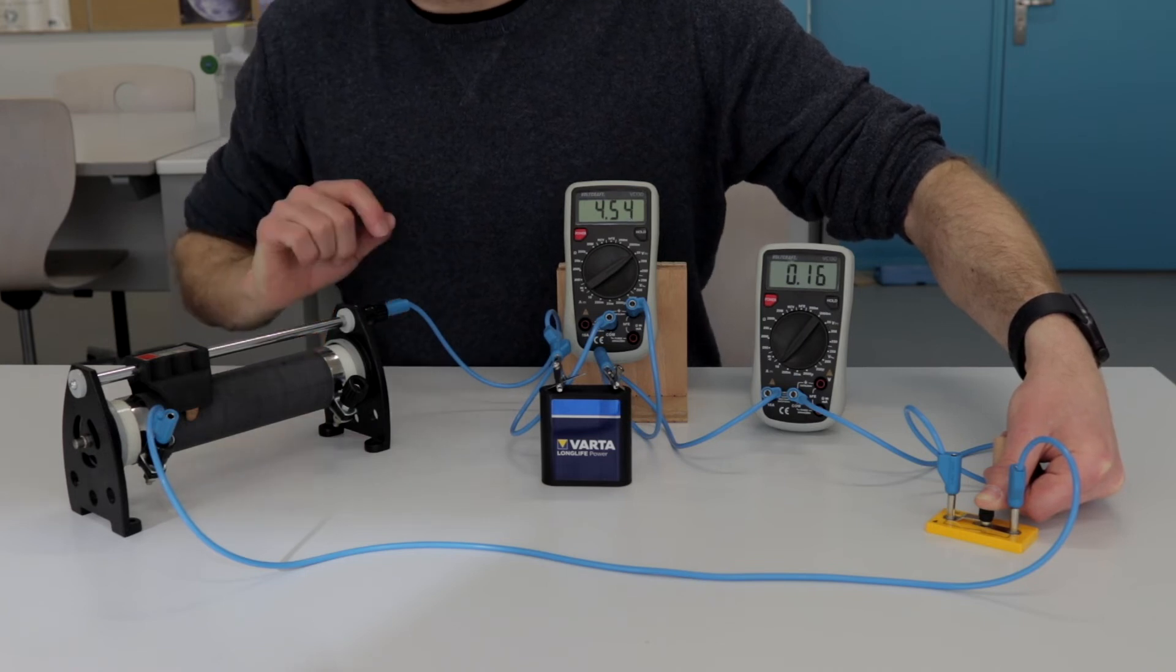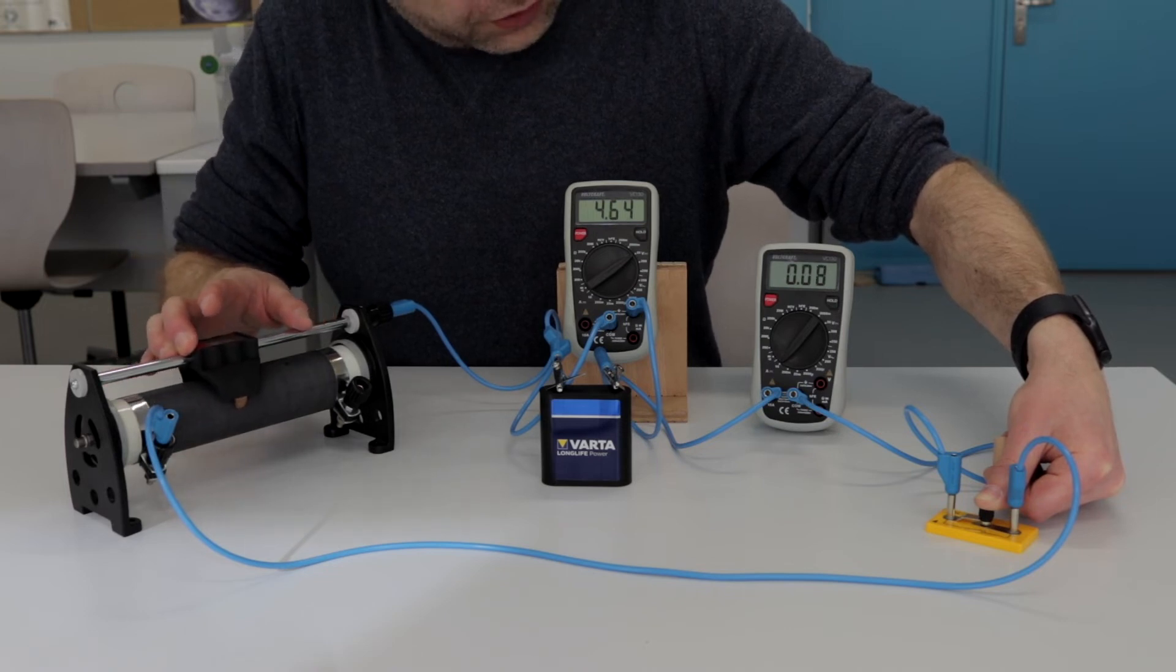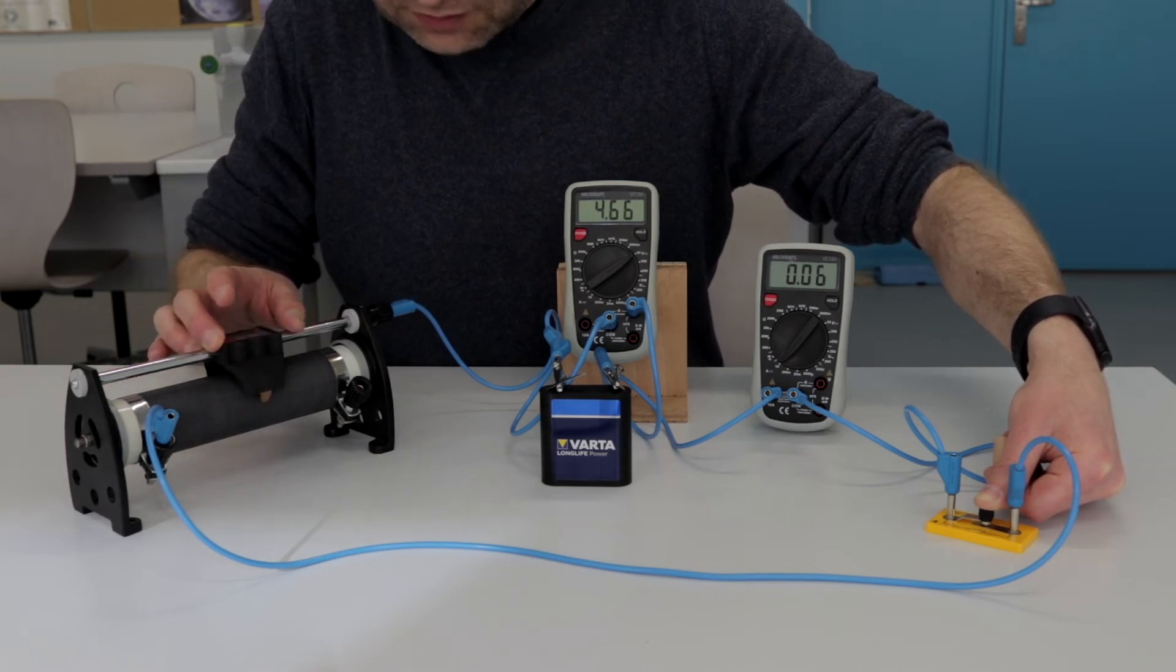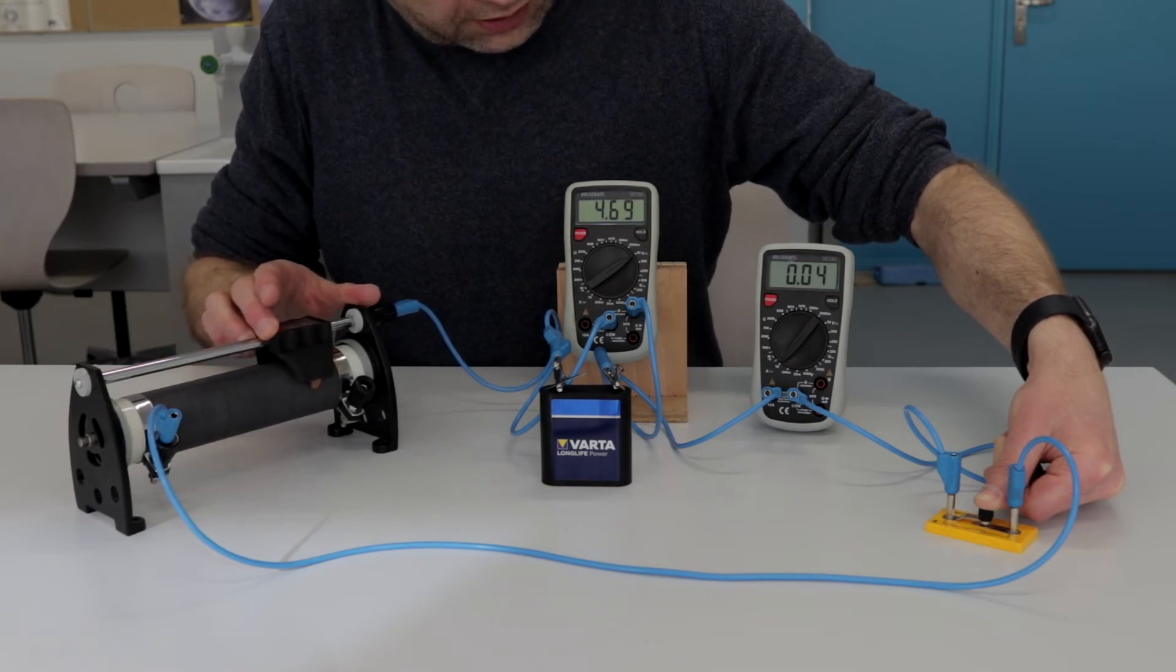Again, let's do this in reverse. As I now increase the resistance of the circuit, obviously the current decreases and the terminal voltage increases as well.